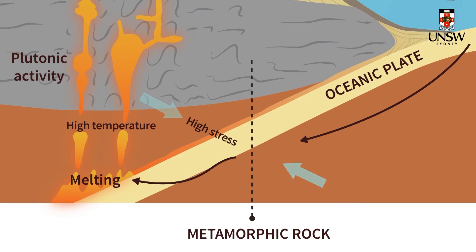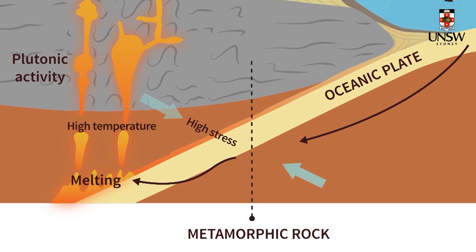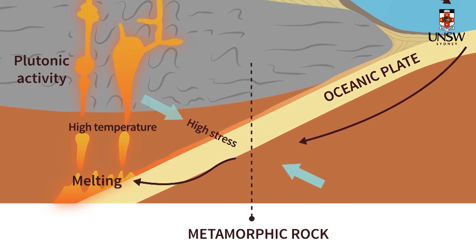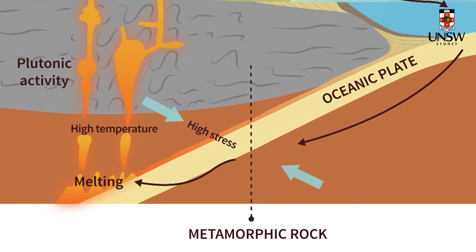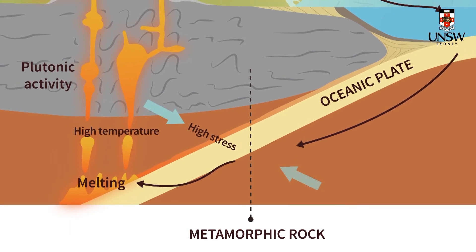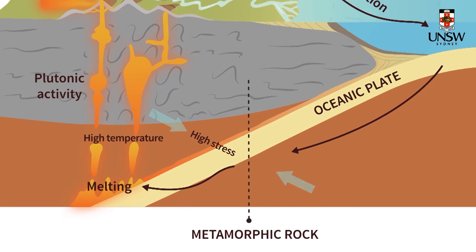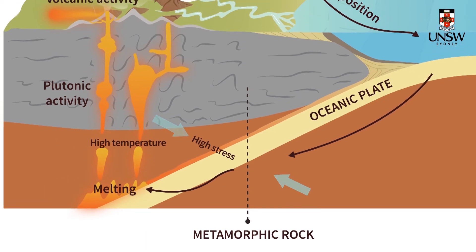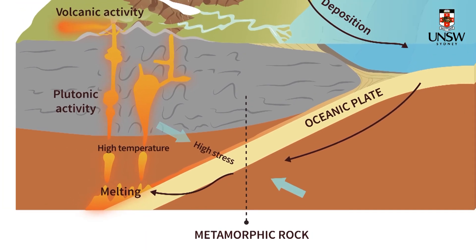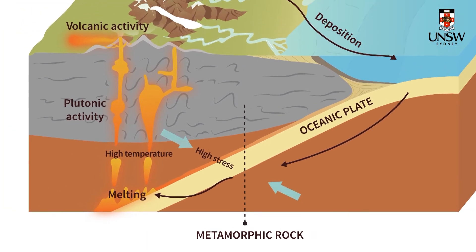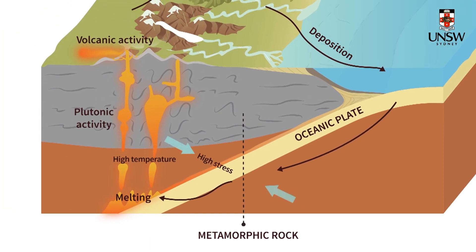There are other, less common types of metamorphism, but we'll focus on local and regional metamorphism here. It's good to know that the parent rock type of metamorphic rocks can be igneous, sedimentary, and even other metamorphic rocks, and that this affects the degree of change that occurs.